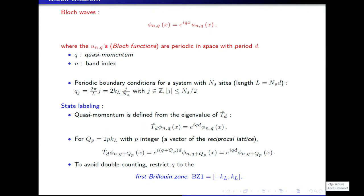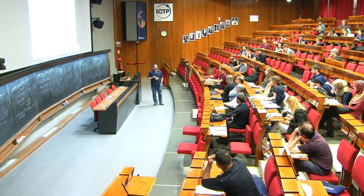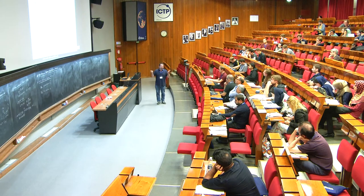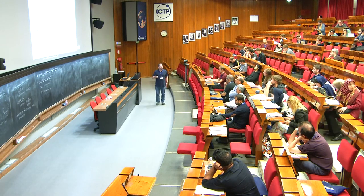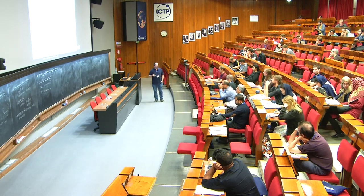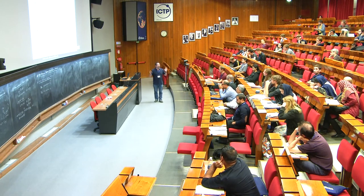If you let q run without restriction you count states many times. The most common approach to avoid double counting is to restrict q to the first Brillouin zone — the primitive cell of the reciprocal lattice — where each state is counted once and only once. In this 1D case that corresponds to the interval [−K_L, +K_L], so the size of the Brillouin zone is 2K_L. The experiment has a cubic volume of roughly 400 sites in each direction with 10⁵ atoms and one to two atoms per site, so typical size is about 100 sites — not fully uniform due to the harmonic trap, but this is a first idealization.